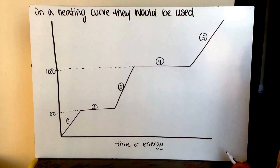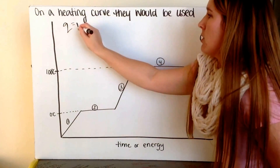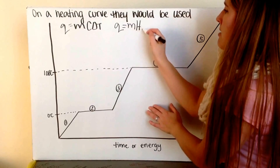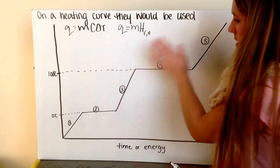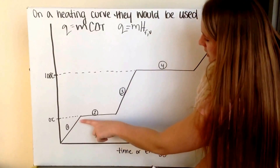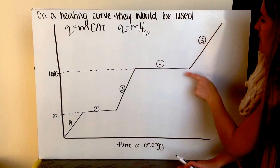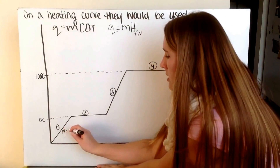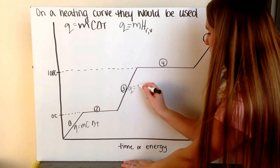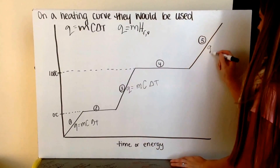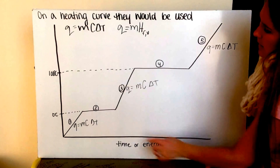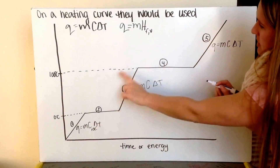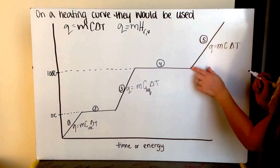Looking at a heating curve, we can place our two equations. For water, position 1 is heating, 2 is a phase change, 3 is heating, 4 is a phase change, and 5 is heating again. Any time we have changes in temperature we use Q equals MC delta T, and C changes depending on the phase: below zero we have ice, between zero and 100 we have liquid water, and above 100 we have steam.